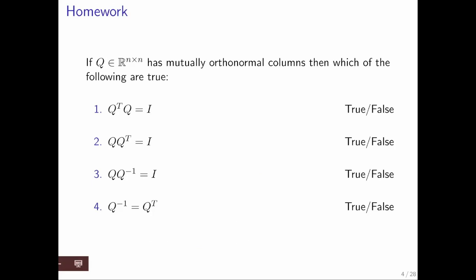Here are some interesting things about matrices with mutually orthonormal columns. These are often called orthogonal matrices. Now it's important here that the matrix is n by n. We already saw that if a matrix has mutually orthonormal columns, then Q transpose Q is the identity.